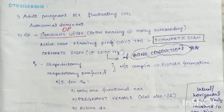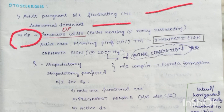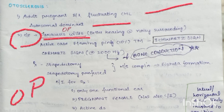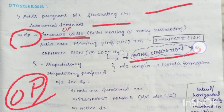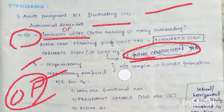Otosclerosis: adult, pregnant, bilateral, fluctuating conductive hearing loss — autosomal dominant. Clinical features include paracusis Willisii — remember OP: O for otosclerosis, P for paracusis Willisii — better hearing in noisy surroundings. In the active case, flamingo pink tympanic membrane is seen, known as the Schwartze sign. Carhart's notch is seen at 2000 Hz in bone conduction only, not in air conduction. Treatment is stapedectomy or stapedotomy — stapedotomy preferred. Most important complication is fistula formation.